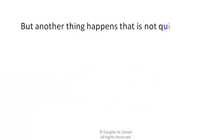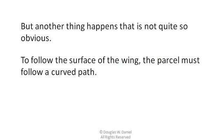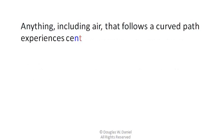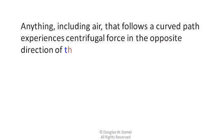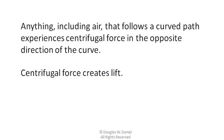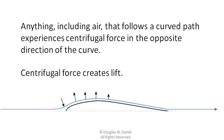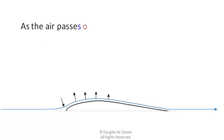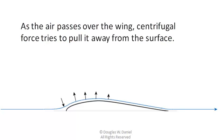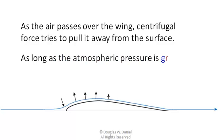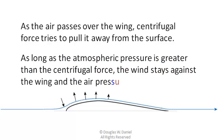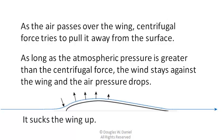We call this kind of drag skin friction. But another thing happens that's not quite so obvious. To follow the surface of the wing, the parcel must follow a curved path. Anything, including air, that follows a curved path experiences centrifugal force in the opposite direction of the curve. And centrifugal force creates lift. As the air passes over the wing, centrifugal force tries to pull it away from the surface. As long as the atmospheric pressure is greater than the centrifugal force, the wind stays against the wing and the air pressure drops. It sucks the wing up.